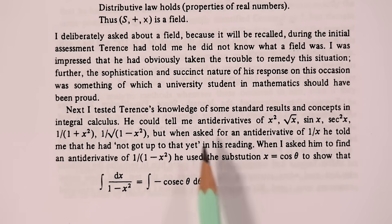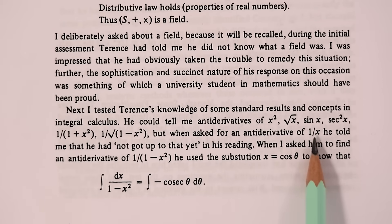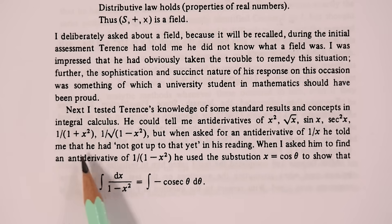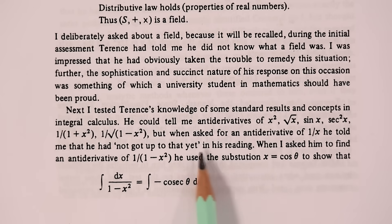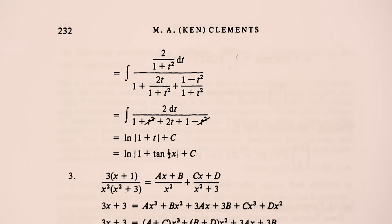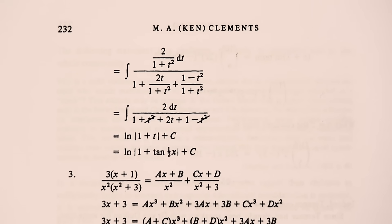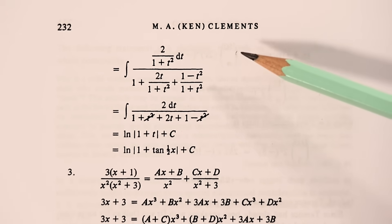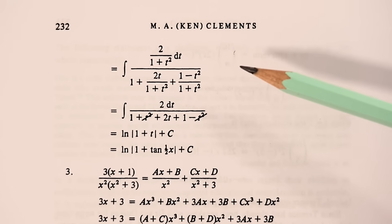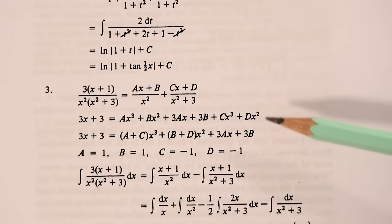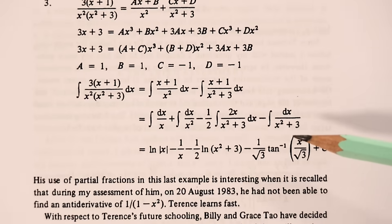They encountered another thing, though, that he didn't know yet. He was asked for the antiderivative of one over x, and responded that he had not got up to that yet in his reading. But on a third visit, not long after the second, Terence had not only mastered the antiderivative of one over x, but was doing things like this with partial fractions.